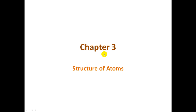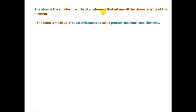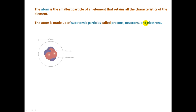Here we start Chapter 3: The Structure of Atoms. Recall that the atom is the smallest particle of an element that still retains all of that element's characteristics. The atom is made up of subatomic particles called protons, neutrons, and electrons.